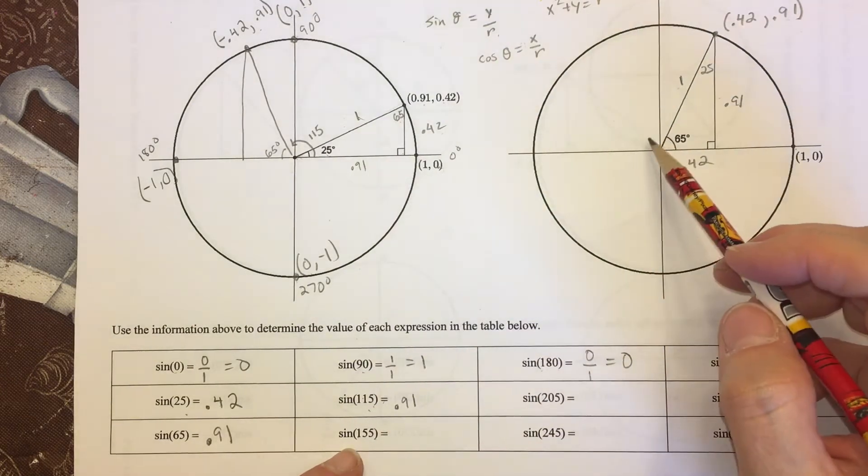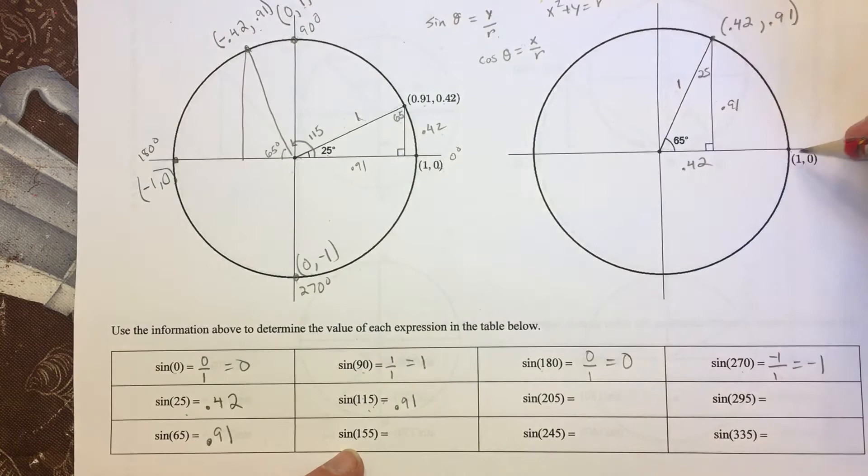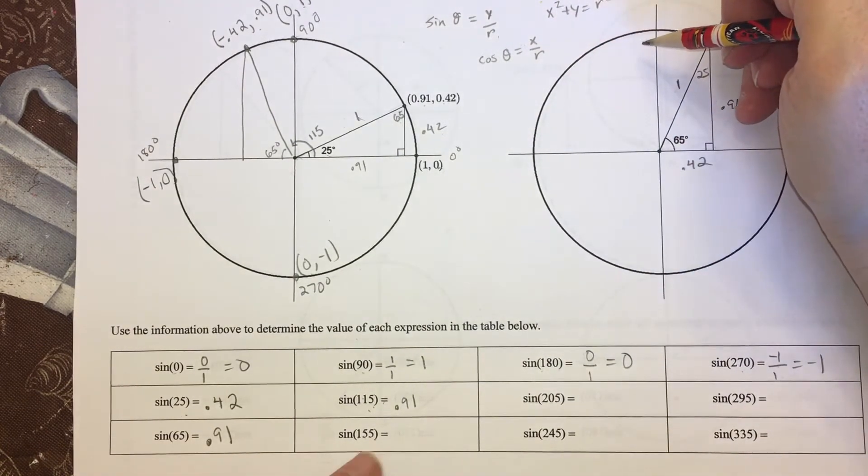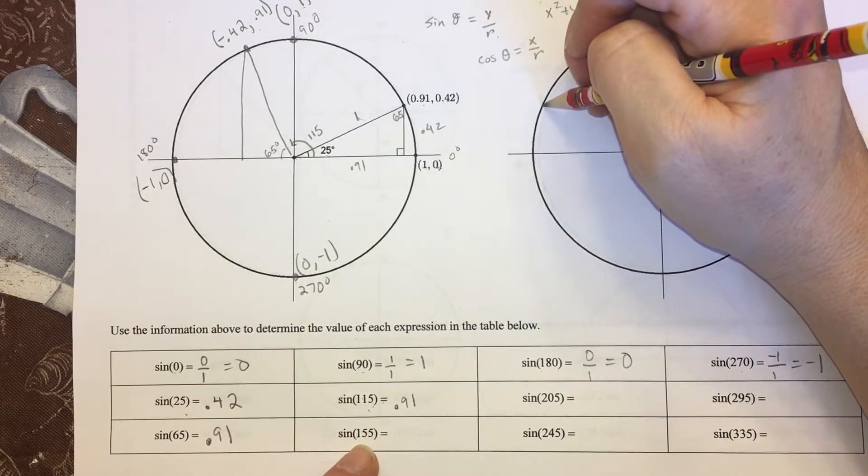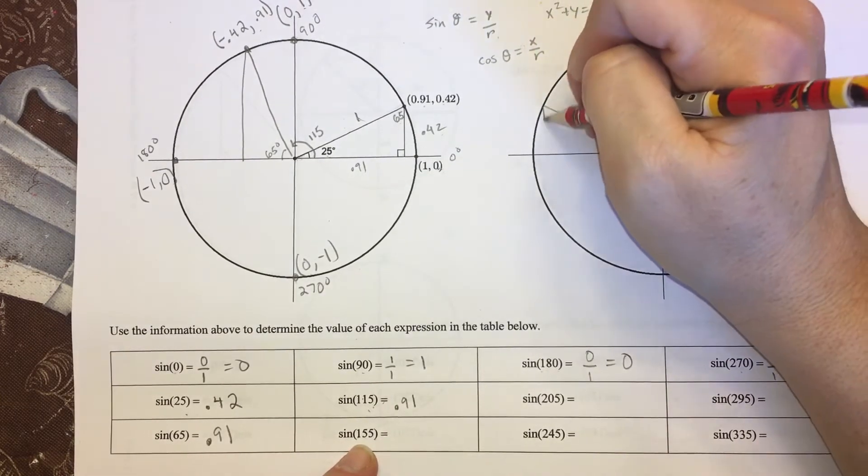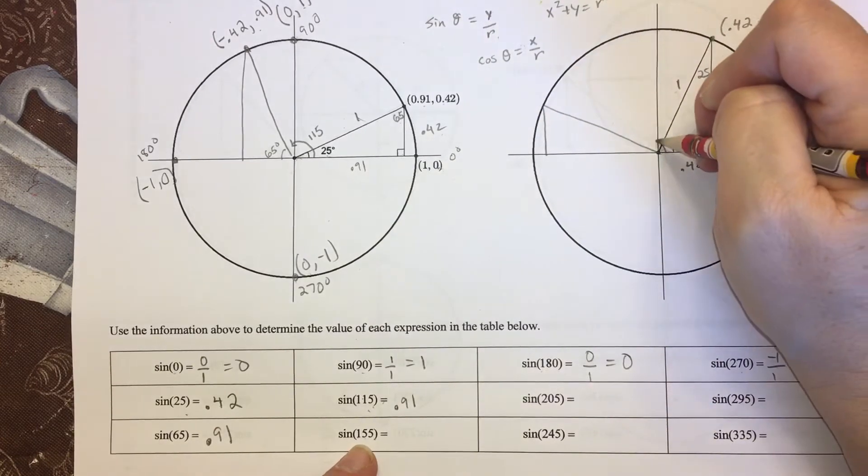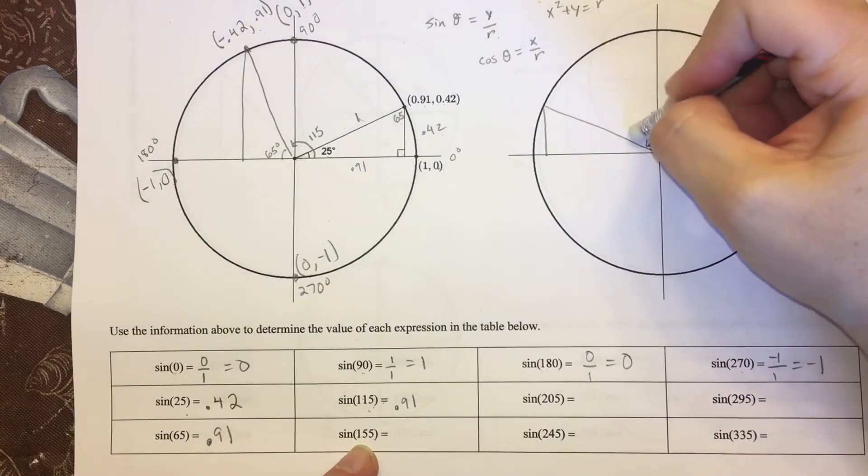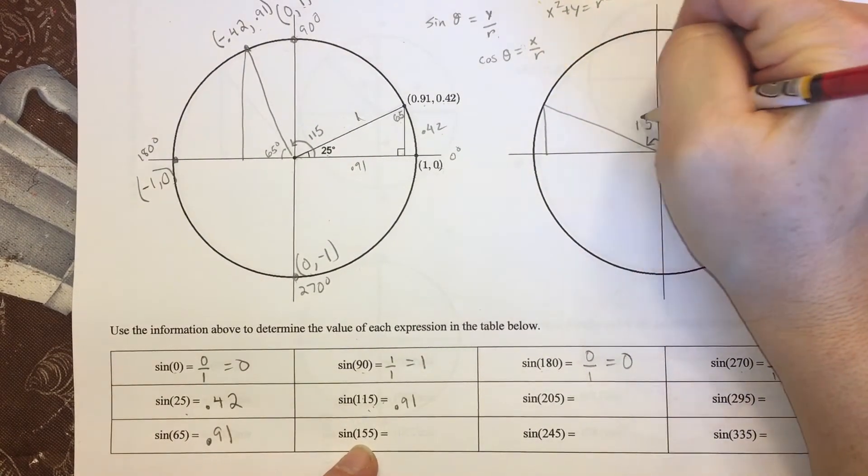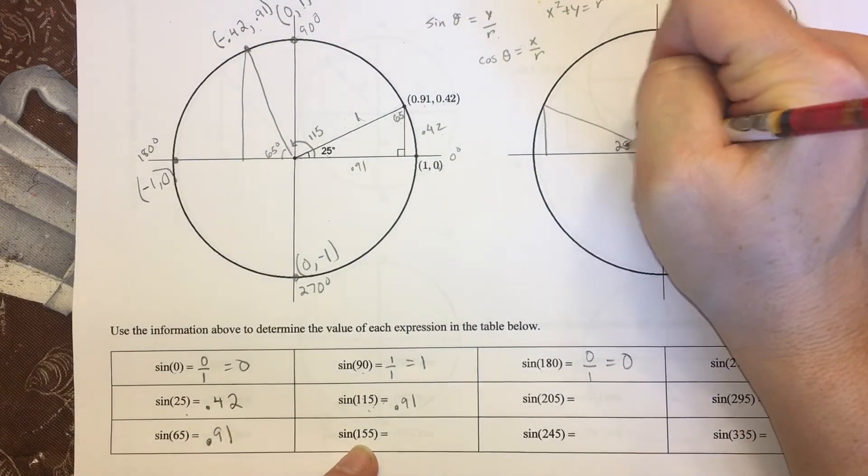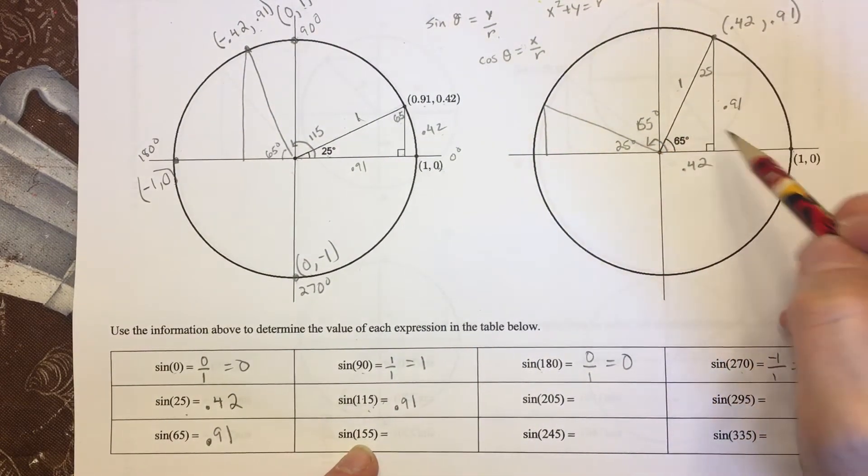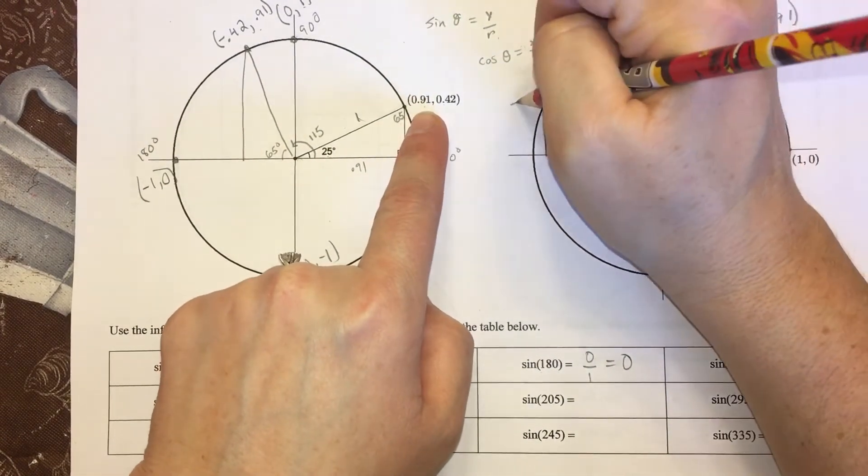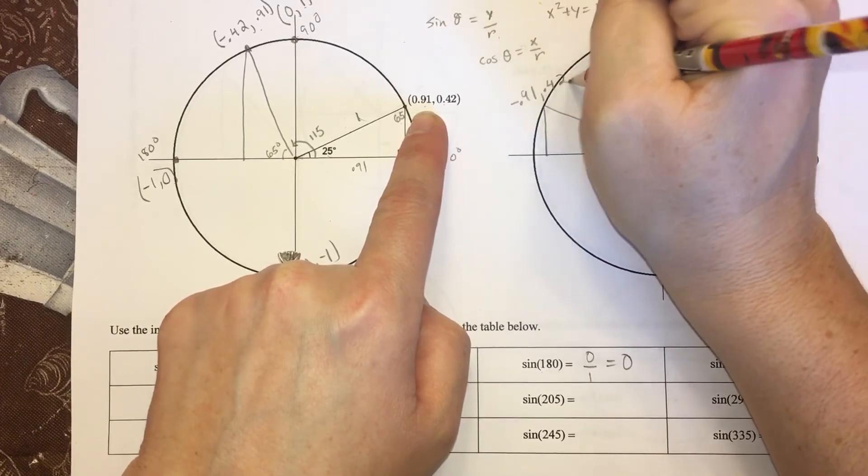So now 155 is also in the second quadrant. I'm going to use the second quadrant because that one's getting crowded. So 90, this would be 180, so let's see. 155 is going to be like... I'm going to have a reference angle. Here's my 155. So then this would be 25 so that the whole first and second quadrant add up to 180. And again, I'm just going to use the symmetry, so this is going to be (-0.91, 0.42). So 155 has a sine value of 0.42 over 1.